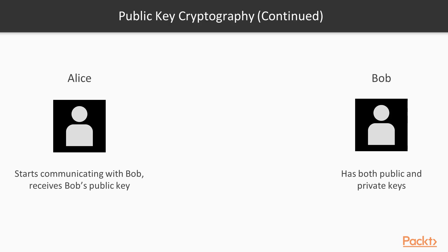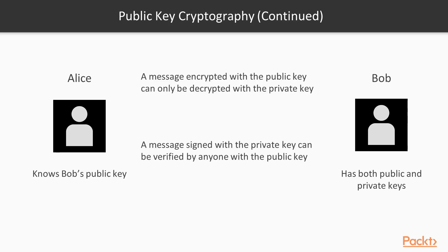Alice starts a communication with Bob — it's the first time she communicates. When Alice communicates with Bob, Bob sends Alice his public key. Bob has both public and private keys. What is important is that a message encrypted with a public key can only be decrypted with a private key. So now that Alice knows Bob's public key, she can encrypt messages with it, send them to Bob, and the only person that will be able to decrypt the message will be Bob. On the other hand, a message signed with a private key can be verified by anyone with a public key. So if Alice sends Bob a message encrypted with Bob's public key and Bob decrypts and signs it with his private key, Alice will be able to know that the message is actually coming from Bob, because Bob is the only one that has that private key which was used to sign the message.